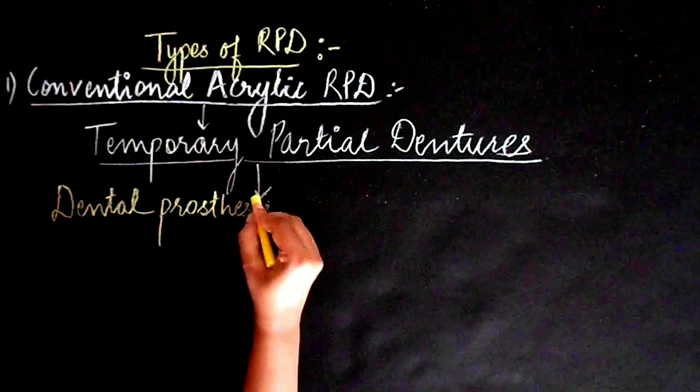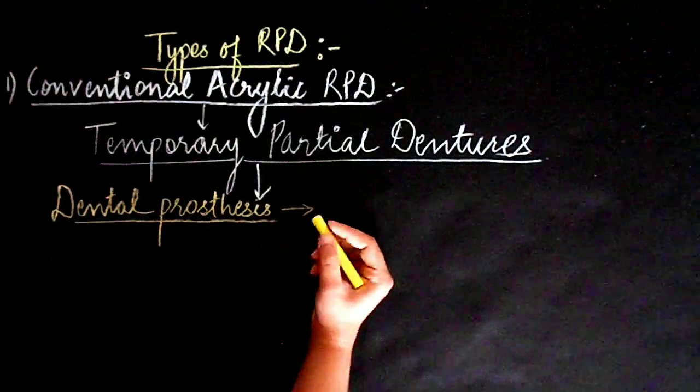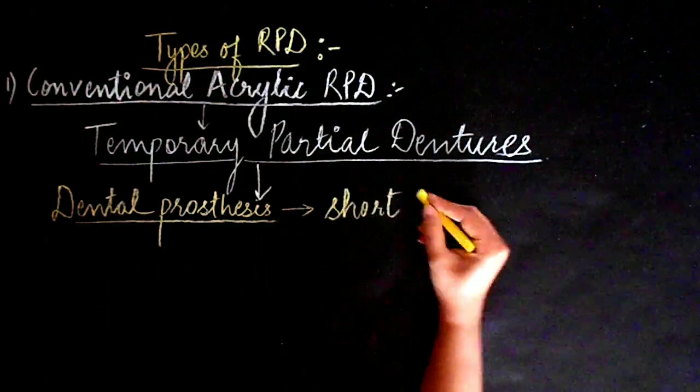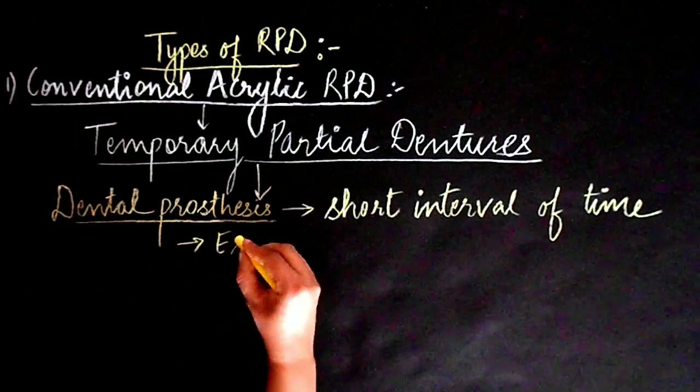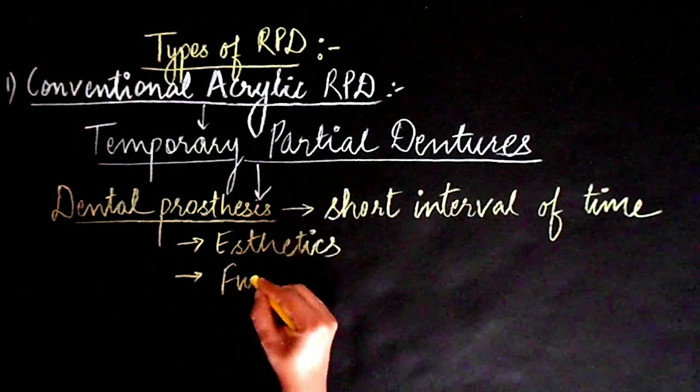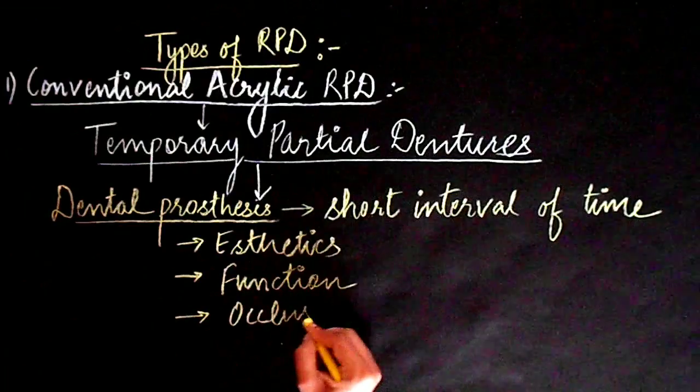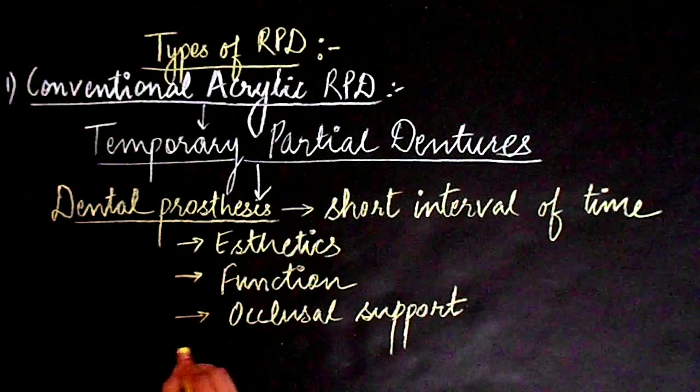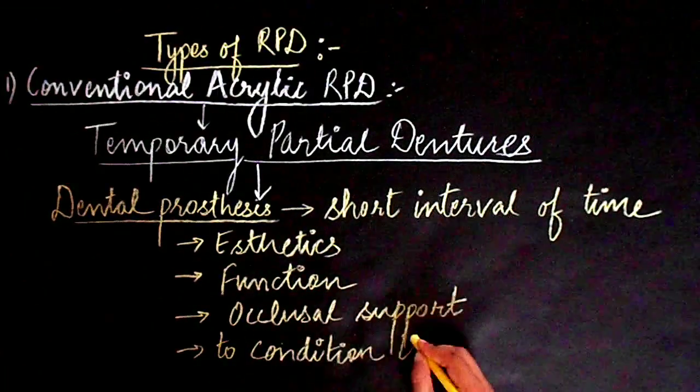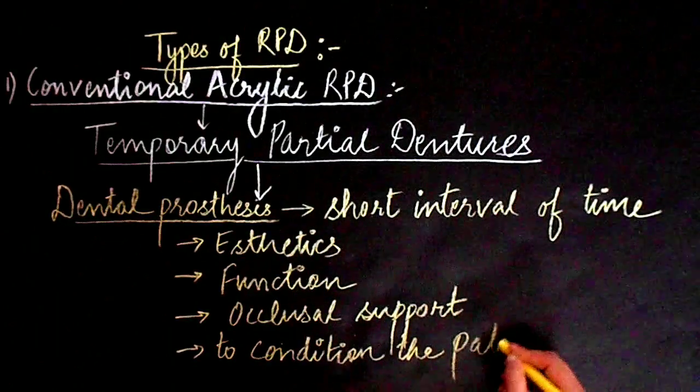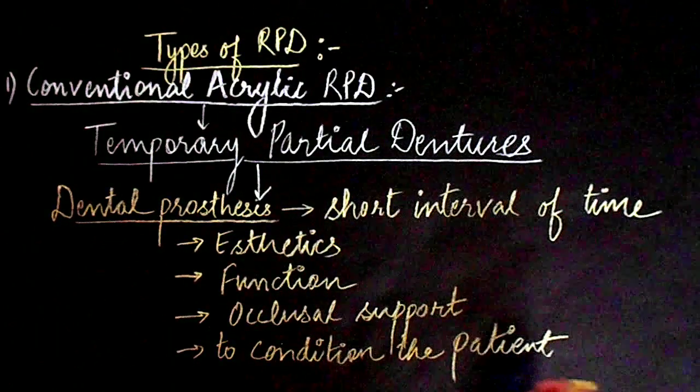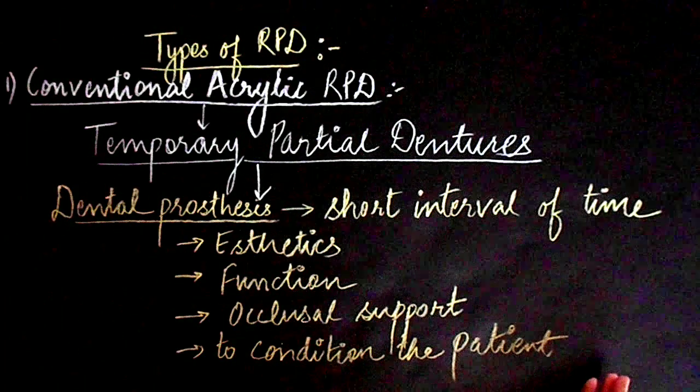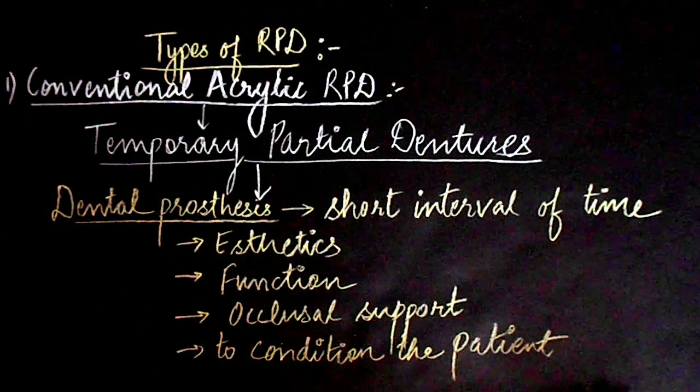They should be used only as temporary partial dentures. What is a temporary partial denture? It is a dental prosthesis intended to be used for a shorter interval of time to provide aesthetics, function (that is mastication), occlusal support, and to condition the patient to acceptance of an artificial substitute for natural teeth until a more definitive dental prosthesis can be provided. Temporary partial dentures are further of various types - I'll talk in detail about these in a separate video.